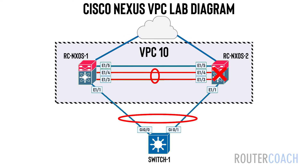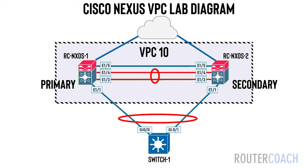Now, there are a few terms that we will familiarise ourselves with before jumping into the configuration. VPC uses two Nexus devices, one as the primary and one as a secondary. A peer is the other Nexus device.